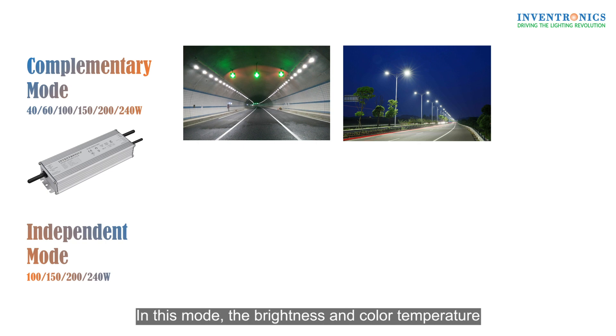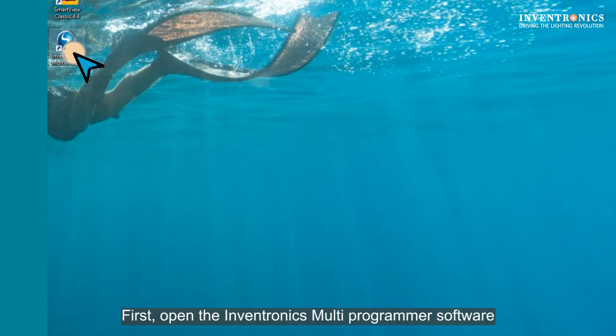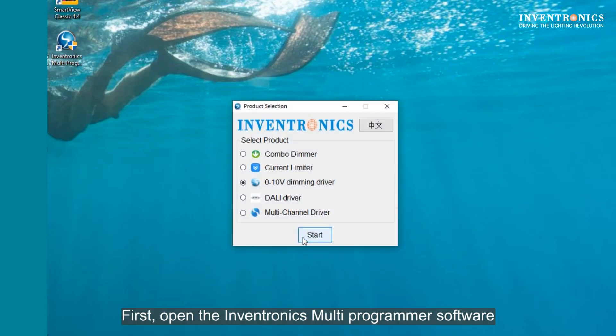In this mode, the brightness and color temperature of the luminaire can be adjusted independently, similar to a water tap where adjusting the temperature does not affect the flow and adjusting the flow does not affect the temperature. Here are the steps to set up complementary mode. First, open the Inventronics multi-programmer software.